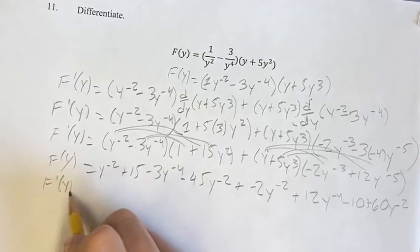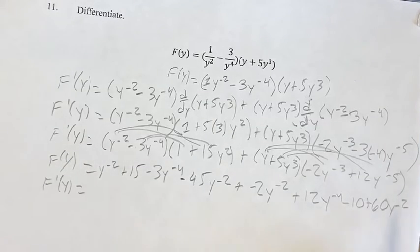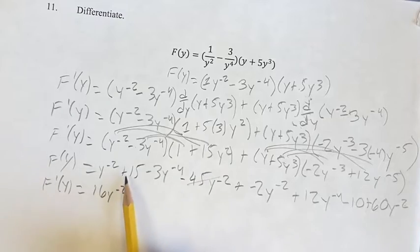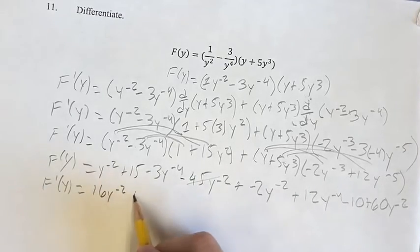Now combining like terms, we get 60y to the negative 2 minus 45y to the negative 2, which is 15y to the negative 2, plus y to the negative 2 would be 16y to the negative 2, plus 15 minus 10 is plus 5.